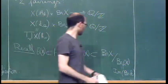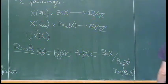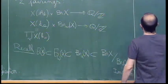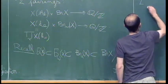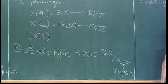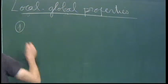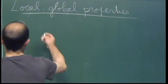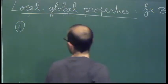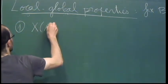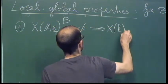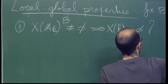So these are all the groups I will use in the talk. Now I can introduce four properties — four approximation properties, or local-global properties, for x. The first one is of course the usual Hasse principle: given a subgroup B of the Brauer group, we ask if the existence of an adelic point orthogonal to B implies the existence of a rational point. If so, we say the Hasse principle holds.